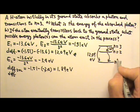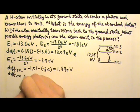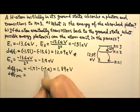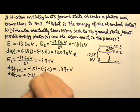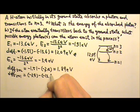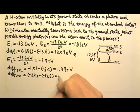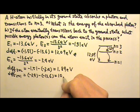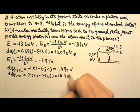And then the difference, if it goes from 2 to 1, would be E2 negative 3.4 minus E1 negative 13.6, and this one will provide a photon that is 10.2 eV.